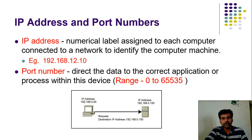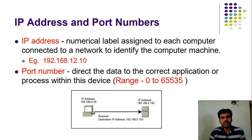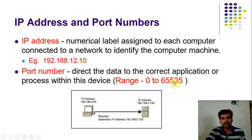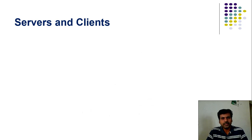Once you connect the system physically, we can identify the application running on the system. To direct the data to a particular application or process, we need a port number. A port number uniquely identifies the application or process in a system. Usually the range of port numbers is 0 to 65535, and within this range you can use any number as a port number.